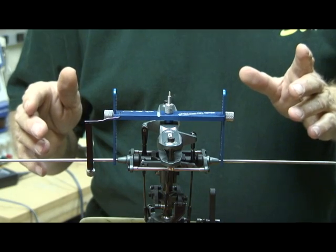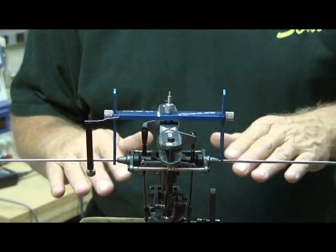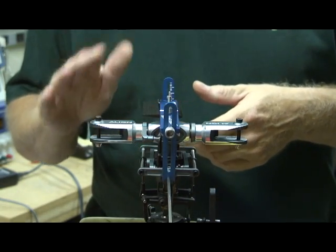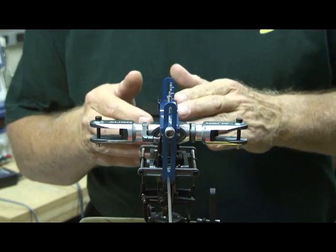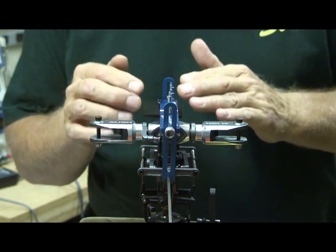Now I'm going to show you how to use this to level your swash plate, and this is really simple. So I'm going to do the elevator first. I bring this around and set the pointer exactly underneath the wire.